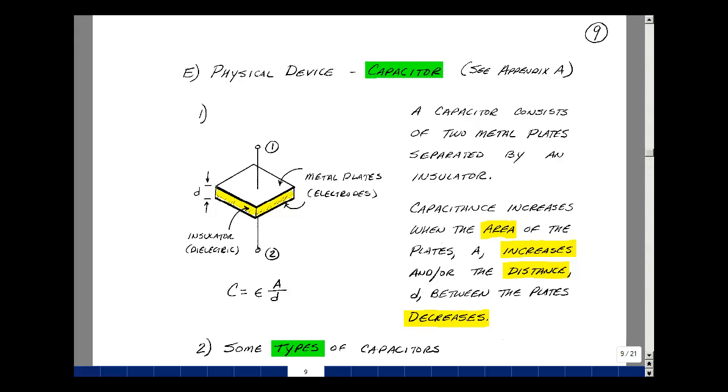Capacitance depends on two things. The amount of area you have of the metal plates, and the larger that area is, the more capacitance you have. Also the distance between the plates - the closer the plates are, the higher the capacitance. So the relationship for capacitance is that it's proportional to area and inversely proportional to distance. Epsilon is the factor that would make those units line up.